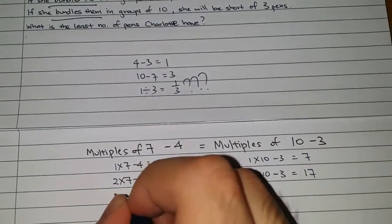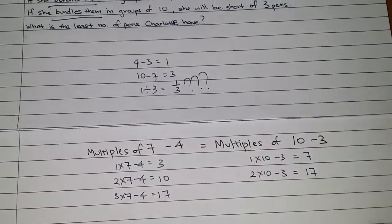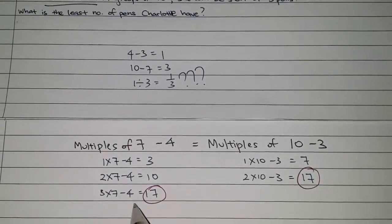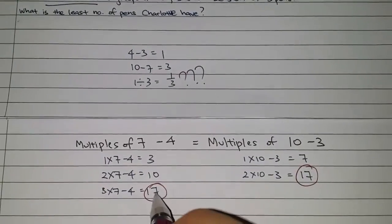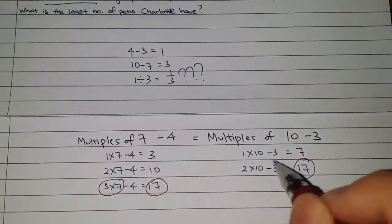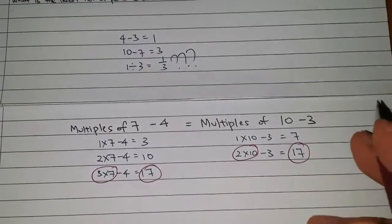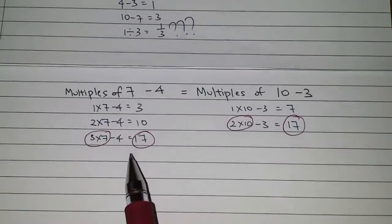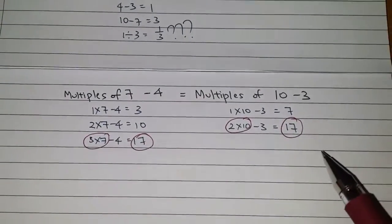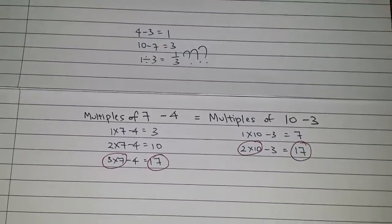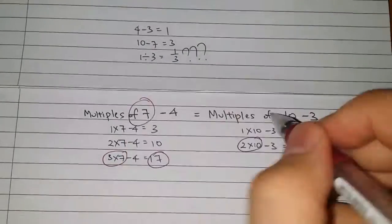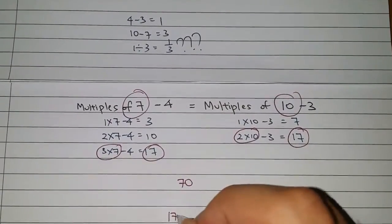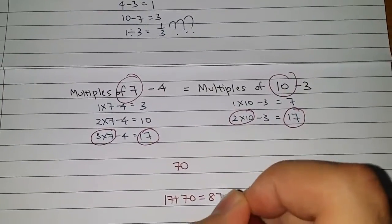The next one, if I do 3 times 7 minus 4, and I get 17. Ah! From here, I realize that I got 17 pants for this. It's the same thing, right? So, which means that if I have 17 pants, I can bundle 3 bundles of this and 2 bundles of this. Am I right? Yes. But, however, the question states that Charlotte has more than 50 pants. So, how? So, since this is the smallest possible number, however, because it's more than 50, what you can do here is that the common multiple of 7 and 10 is 70. So, plus that to it, 17 plus 70, I get 87. And this is the answer.